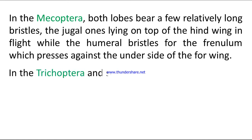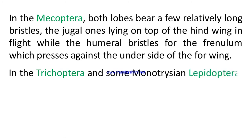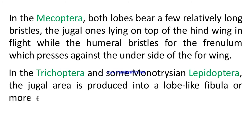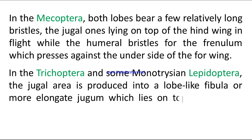In the Trichoptera and some monotrysian Lepidoptera, the jugal area is produced into a lobe-like fibula or more elongate jugum, which lies on top of the hind wing.